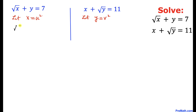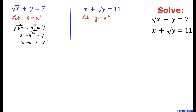Substituting, we get square root of u squared plus v squared equals 7. The square and square root undo each other, giving us u plus v squared equals 7. Moving v squared to the right-hand side: u equals 7 minus v squared. Let's call this equation number one.